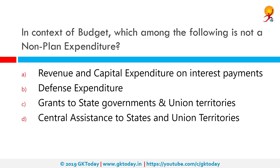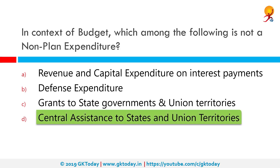In the context of the budget, which among the following is not a non-plan expenditure? That would be central assistance to states and union territories, which is a planned expenditure. Non-plan expenditure is what the government spends on non-productive areas such as salaries, subsidies, loans, and interest. Planned expenditure pertains to money set aside for productive purposes, like various projects of ministries.